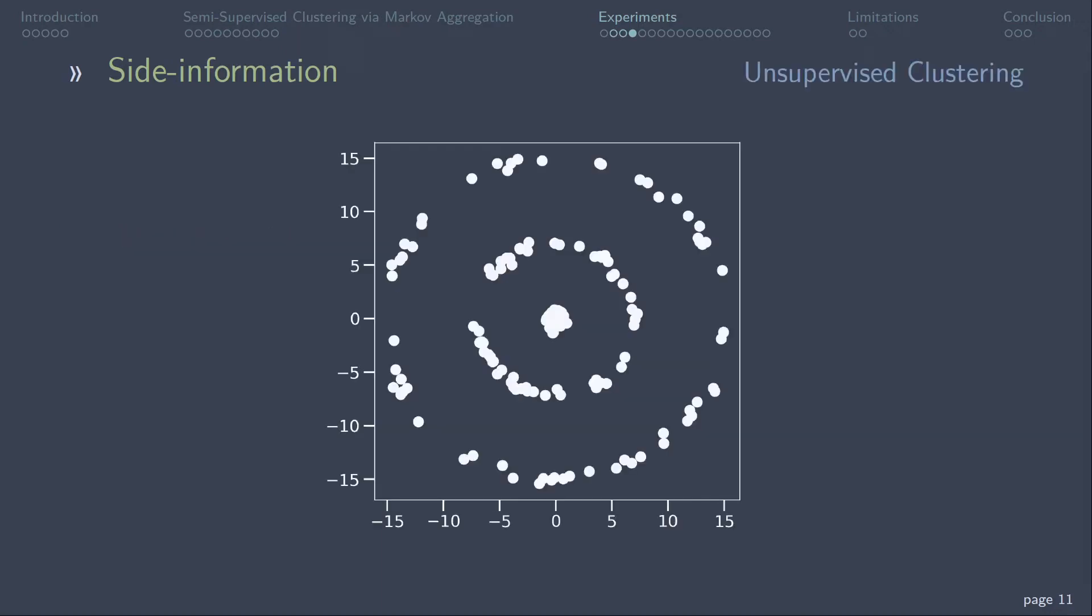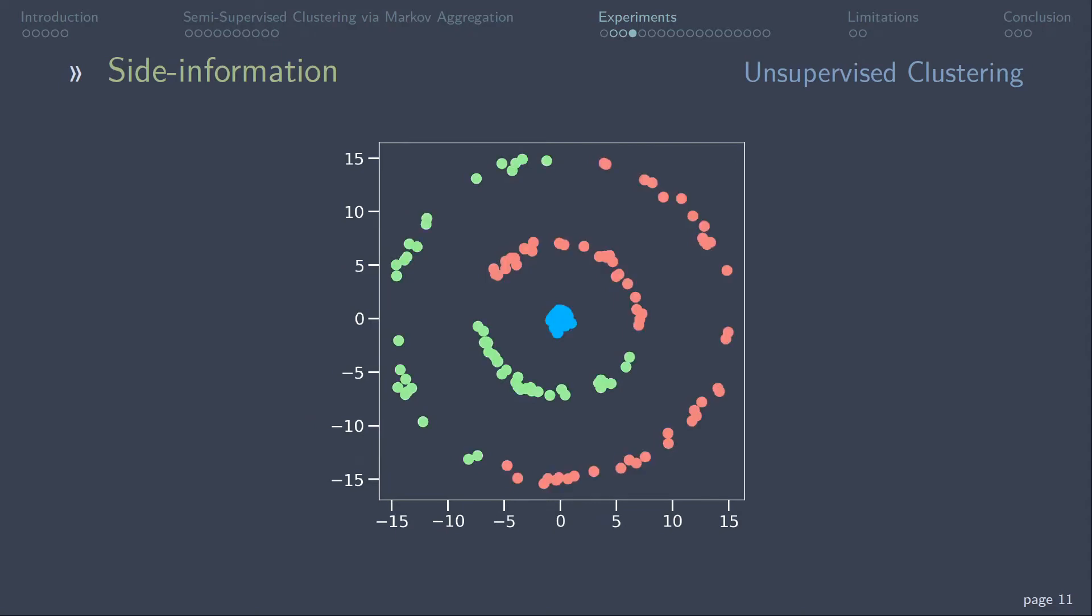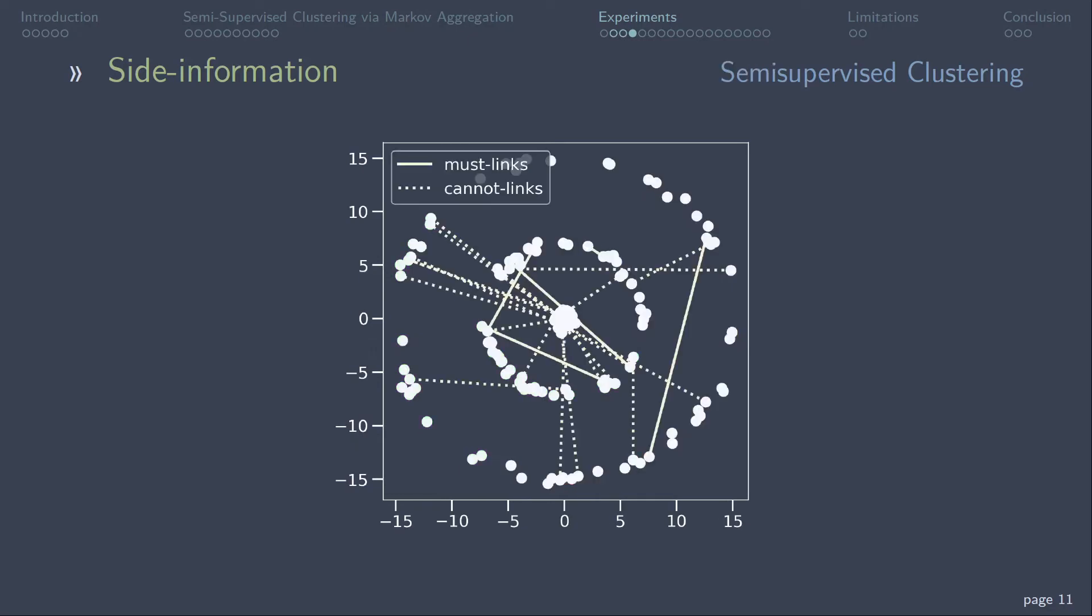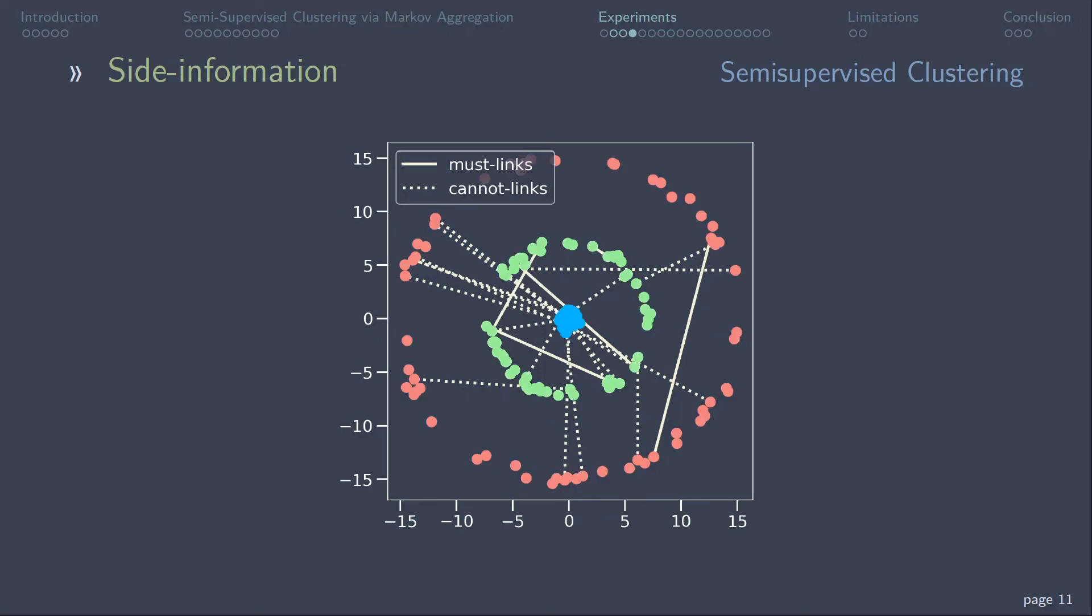In this synthetic example, consisting of three concentric circles, we see the clustering result for the unsupervised algorithm that does not lead to the correct partitioning. However, when adding a few pairwise constraints as indicated in the figure, the results are indeed correct.